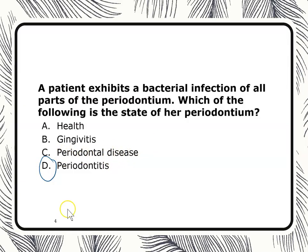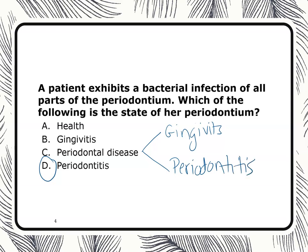Some of you might ask, why not 'periodontal disease'? Well, periodontal disease is basically a heading. It could mean gingivitis or it could mean periodontitis. It's too vague. Your best answer is periodontitis in this case, because all parts of the periodontium, including the alveolar bone, are affected.